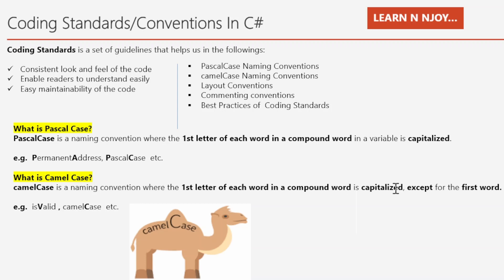Camel case is a naming convention where the first letter of each word in a compound word is capitalized except for the first word. For example, 'isValid' — the V is capital, and in 'camelCase', the C is capital. The image of a camel is a helpful visual: the capital letters in the middle of a compound word resemble the humps of a camel.